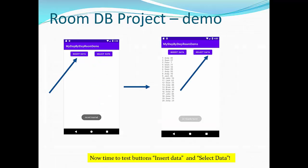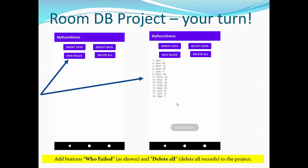Okay, so when you run this project, now it's time to test buttons: insert data and select data. When you run this project, you will get insertion that will be provided by Toast, and you'll get selection when it will provide the whole list of items from the database. So for your individual modifications for the Room database project, your turn: you will add the buttons Who Failed and Delete All. Who Failed button will show students who failed the course, which is between 0 and 49. And Delete All will be the button that deletes all records from database.